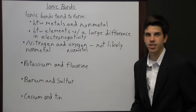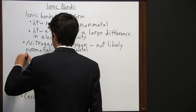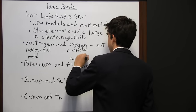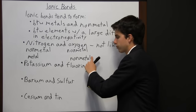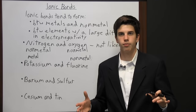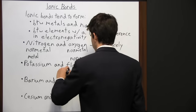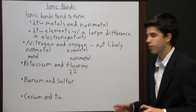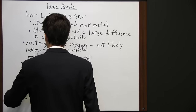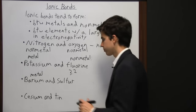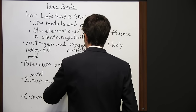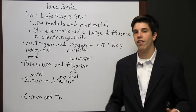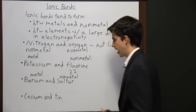Potassium is an alkali metal and fluorine is a non-metal — we've met the first criteria. There's also a high electronegativity difference of 3.2, which is quite high, so they're likely to form ionic bonds, specifically potassium fluoride. Barium is a metal and sulfur is a non-metal, and their electronegativity difference is moderately large at about 1.6, so they're likely to form ionic bonds, specifically barium sulfide.